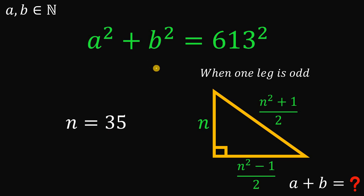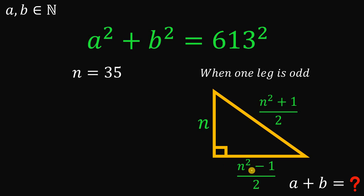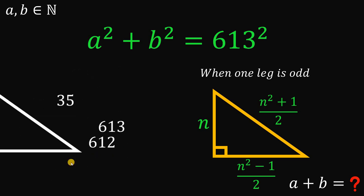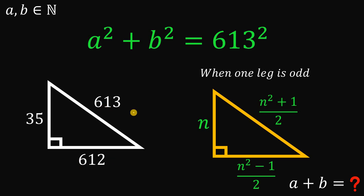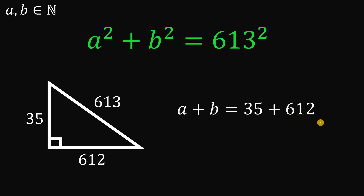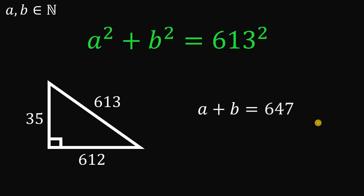So either a or b equals 35. With n equals 35, the other leg is (35 squared minus 1) over 2, which equals 612. And the hypotenuse (35 squared plus 1) over 2 equals 613. So our right triangle has side lengths 35, 612, and 613. Therefore, a plus b equals 35 plus 612, which gives us 647.